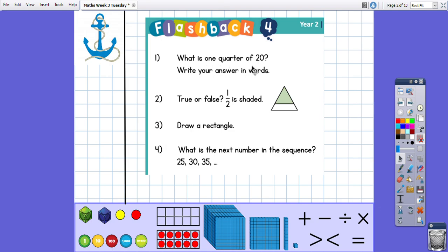So question one, what is one quarter of 20? Write your answer in words. I would have drawn four groups because I know that when I'm looking at quarters I have four groups and I would have shared 20 objects between four groups and then counted up one of the groups and that would have given me the answer five.